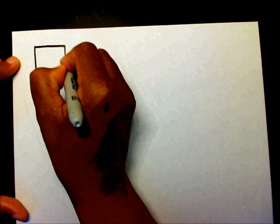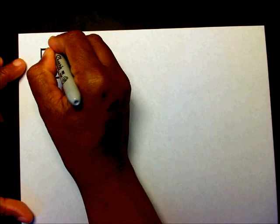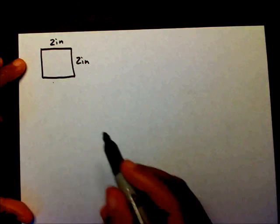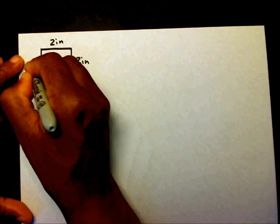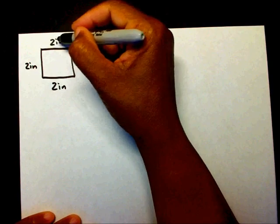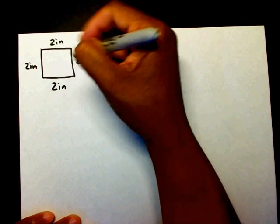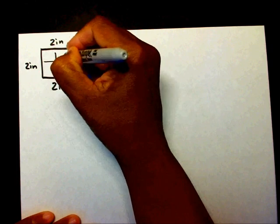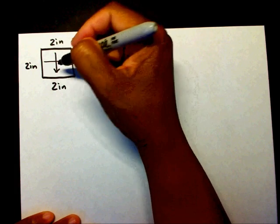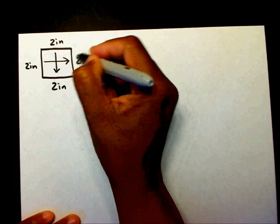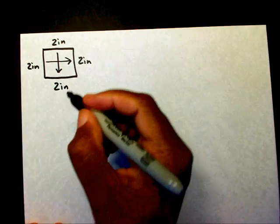Let's look at a square and use the two-inch example. When you know it's a square, really the only thing I need to do is give you two sides, because the opposite sides will be the same length. So if this side is two inches, I know this side is two inches, and if this side is two inches, I know this side is two inches.